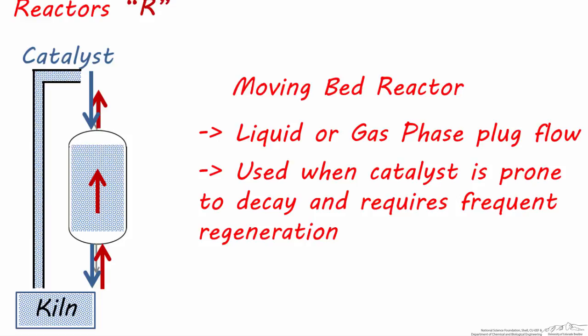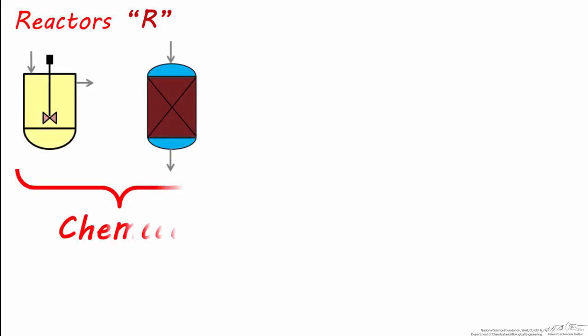This type of reactor can accommodate liquids or gases and are typically used in large commodity chemical processes where the catalyst is prone to fouling and decay. Let's next look at some common CHEMCAD and ASPEN reactor symbols.